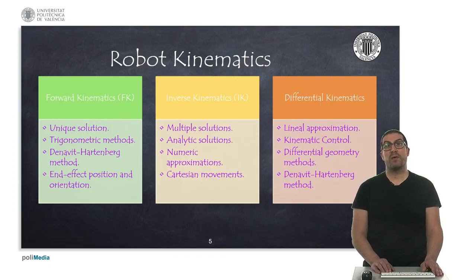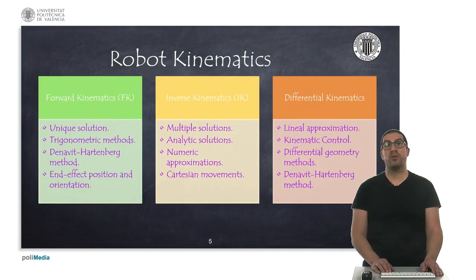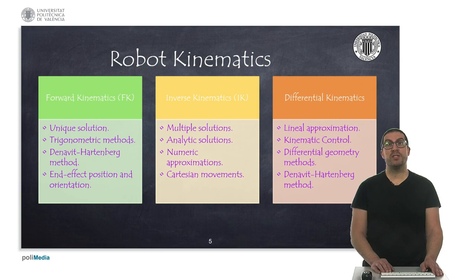The inverse kinematics of a robot usually has multiple solutions, since there are several configurations that a robot can apply in order to reach the same position and orientation. For the most common robots, an analytical solution of the inverse kinematics is known, but they can produce solutions that are numerically unstable near singular robot configurations. There are methods based on numerical approximations and optimization techniques that allow obtaining numerically more stable solutions using the Jacobian of the robot. Inverse kinematics is used mainly for generating robot movements in the Cartesian space.